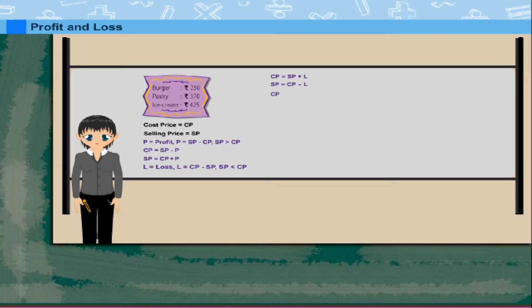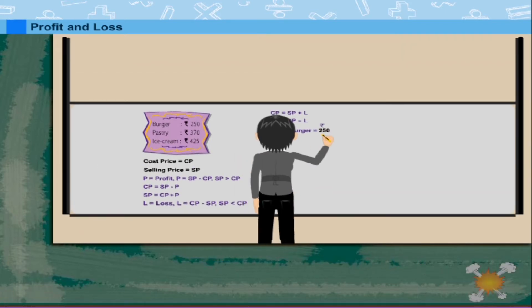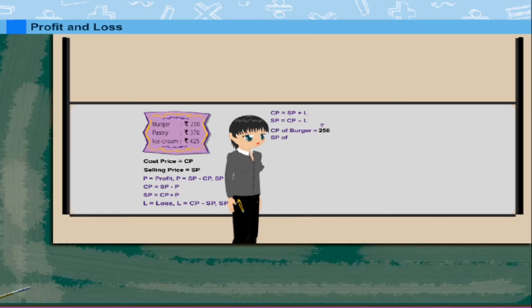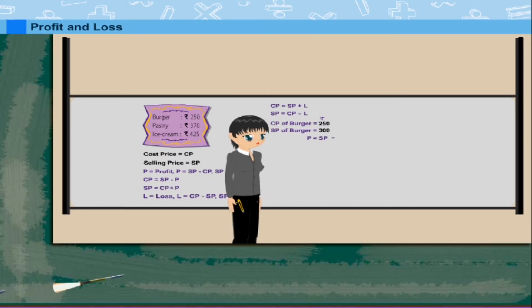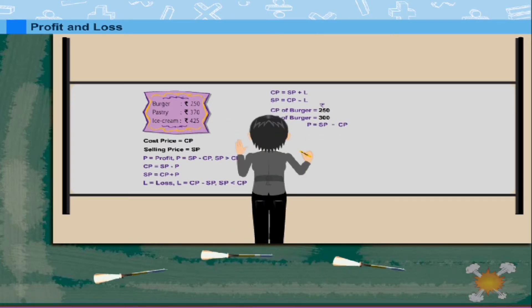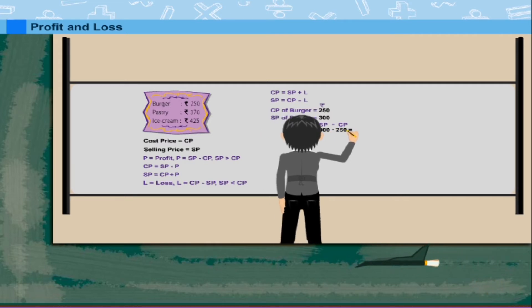Nancy ma'am now works out her profit and loss. CP of burger is Rs.250 and SP is Rs.300. SP is greater than CP. So, the profit is 300 minus 250 equals Rs.50.